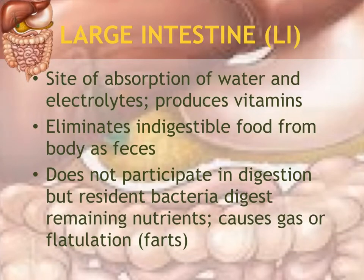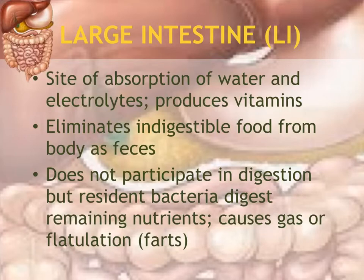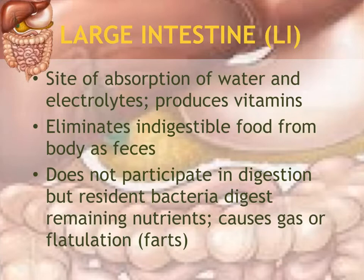The large intestine surrounds the small intestine. It is a site of absorption of water and some electrolytes, and it produces vitamins. There is no digestion occurring in the large intestine — its main job is to absorb water. When food enters the large intestine from the small intestine, it is chyme, which is very watery — similar to the consistency of diarrhea. The large intestine reabsorbs the water out of the chyme to solidify the waste, then stores it in the last portion to be eliminated.